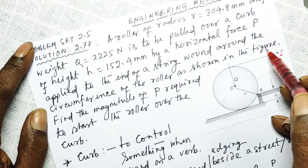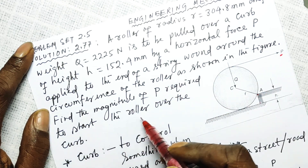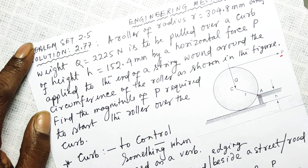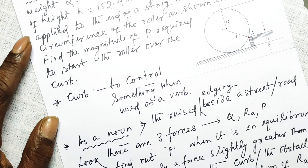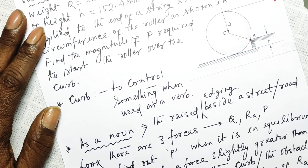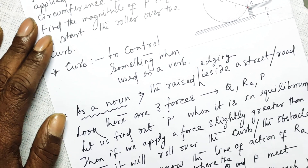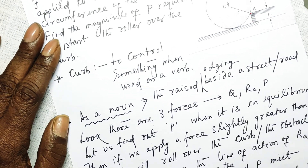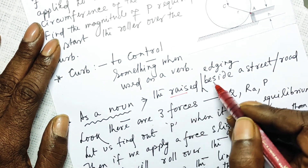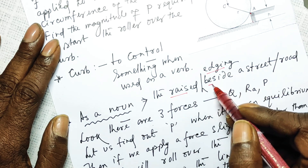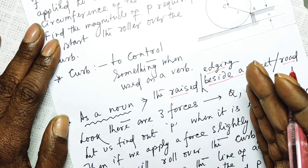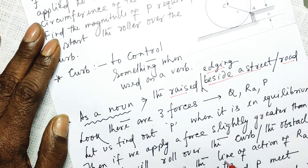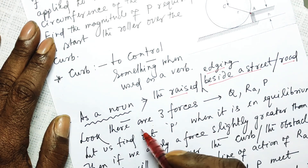Find the magnitude of P required to start the roller over the curb obstacle. When the word 'curb' is used as a verb it means to control something; when used as a noun, a curb is the raised edging beside a street or road — the road side is slightly raised, and that is called a curb.